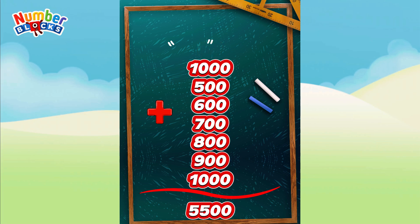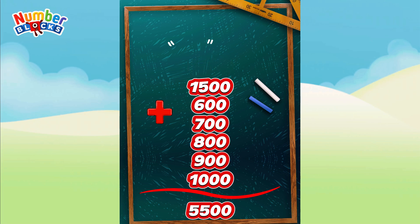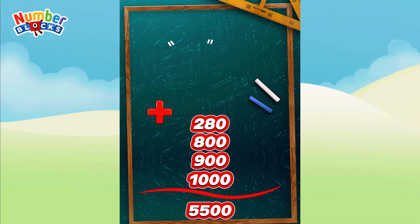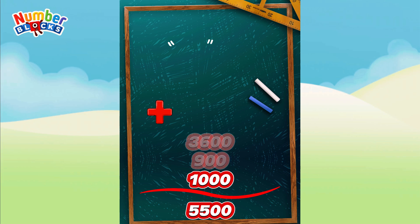1,000 plus 500 is equal to 1,500. 1,500 plus 600 is equal to 2,100. 2,100 plus 700 is equal to 2,800. 2,800 plus 800 is equal to 3,600. 3,600 plus 900 is equal to 4,500. 4,500 plus 1,000 is equal to 5,500.